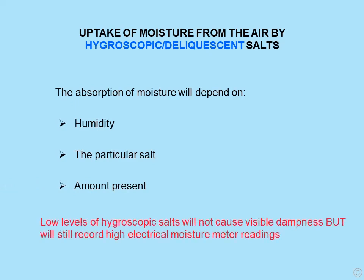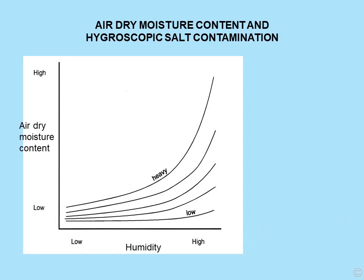Low levels of hygroscopic salts don't usually cause visible dampness, but they will still record high electrical moisture meter readings. This diagram shows the relationship between the air-dry moisture content — the hygroscopic moisture content — and humidity and level of contamination. Low contamination shows little change with increasing humidity, but with heavy contamination at high humidity, we get a massive increase in water absorbed from the atmosphere. The highest encountered was 24 percent moisture content, all of it hygroscopic.